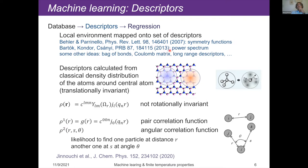Looking in the literature: in 2007, Behler and Parrinello suggested what they called symmetry functions — but if you look carefully, they suggested exactly the same thing: a combination of pair correlation descriptors and angular correlation functions. In 2013, Bartók, Kondor, and Csányi suggested something they called the power spectrum. It turns out that's again nothing but a combination of pair correlation functions and angular correlation functions. So it's fair to say these ideas are essentially the same, and these are the ideas everyone is now using.